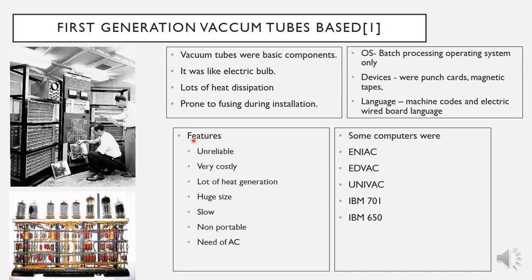Features of first generation vacuum tube computers: they were unreliable due to frequent fusing, very costly, generated a lot of heat, were huge in size and not portable, and continuously needed air conditioning. Some examples were ENIAC, EDVAC, UNIVAC, IBM 701, and IBM 650.